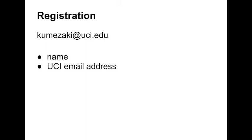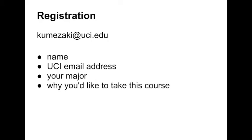Perhaps someone can write my email address on the whiteboard as well. Make sure to include your name, UCI email address, your major, and why you'd like to take this course. There are no guarantees that you will be allowed to enroll, unfortunately, as the maximum for this course has increased from 35 last year to 80 this year. You will receive an email with instructions on how to add the course if you are granted enrollment, or I'll let you know if not.